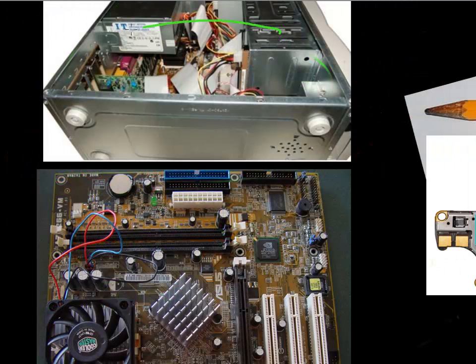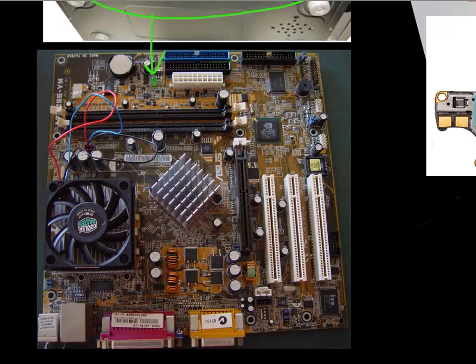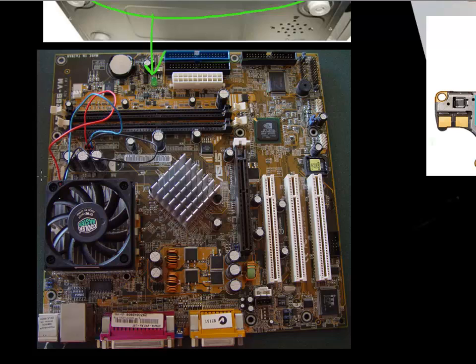To give you some more context on how advanced the packaging has become, this image shown here shows an old desktop computer that I had bought in 2001. And shown below here is the guts of this computer or the motherboard. And you can see the microprocessor, it has this big fan on the top. You can see different chips soldered together. And you can see this quadruple package.